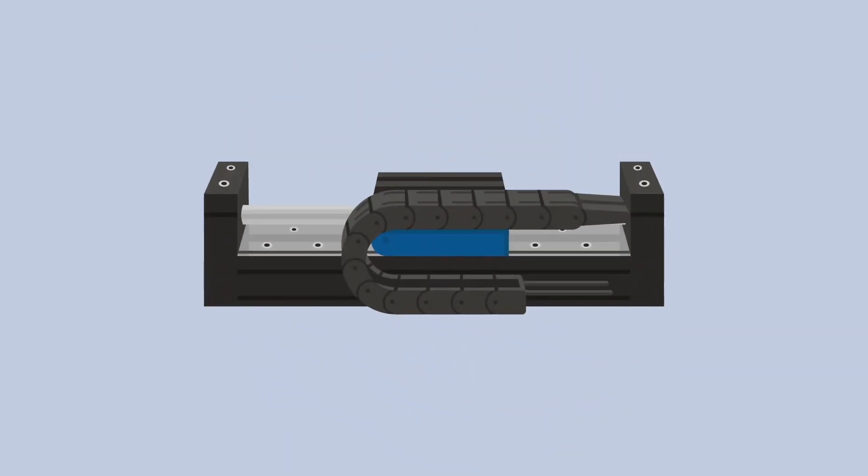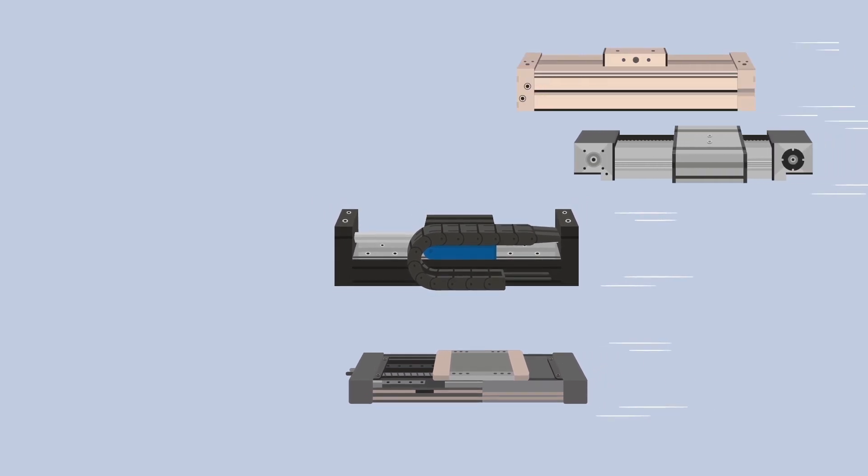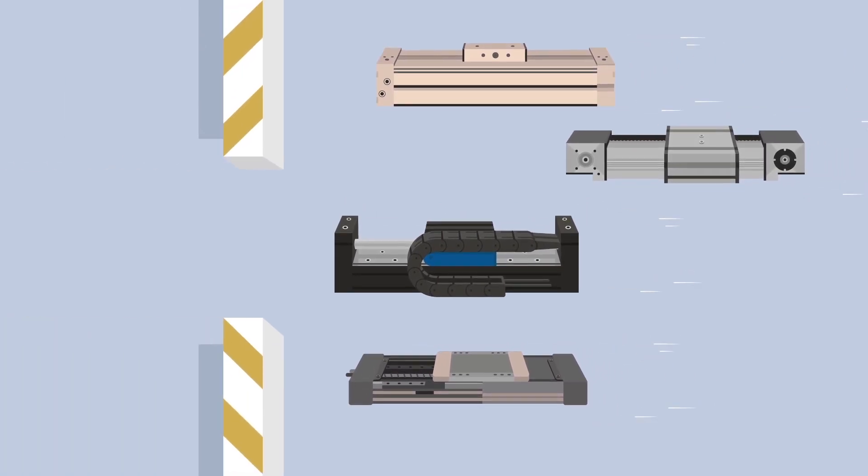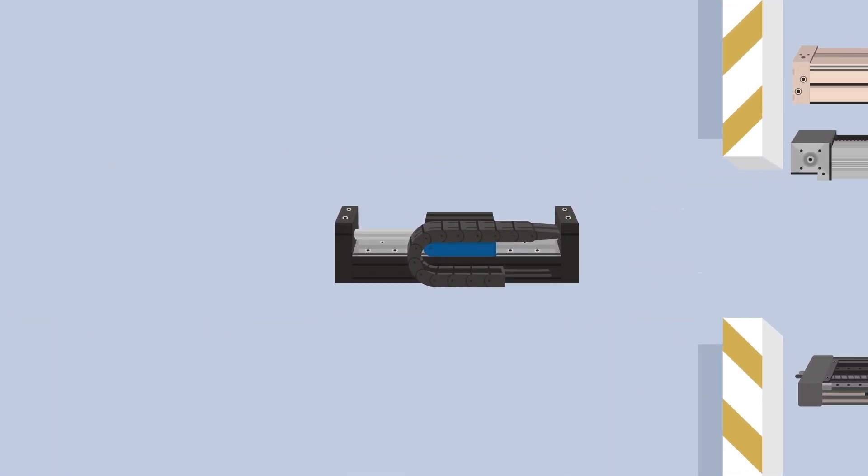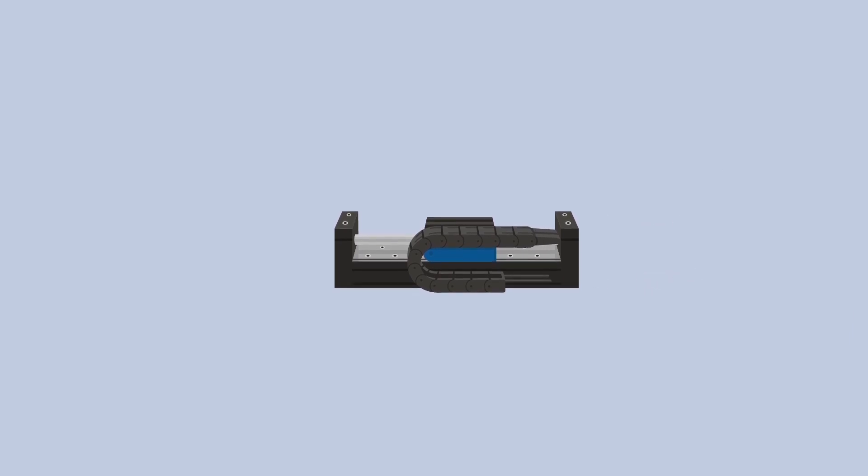Dunker Motorin's direct linear drives were developed precisely for such requirements. Where traditional linear technology reaches its limits, this is where the direct linear motor in the servotube series comes in.